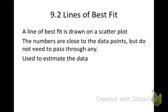In section 9.1, we learned how to make a scatter plot. To that scatter plot, we're now going to add our lines of best fit. What is a line of best fit? A line of best fit is drawn on a scatter plot. The numbers are close to the data points, but do not need to pass through any of those data points. We're not connecting the dots. We're making our best fit line, and we're using that to estimate the data.